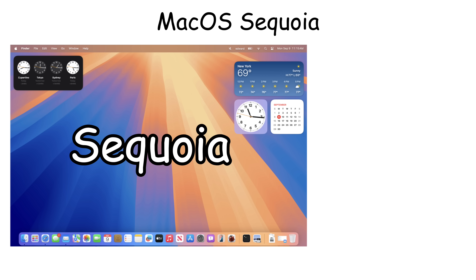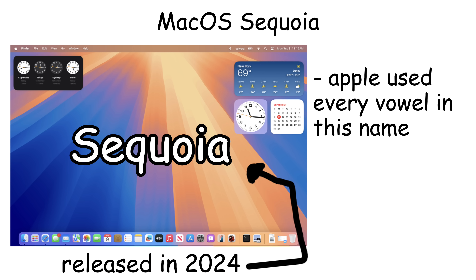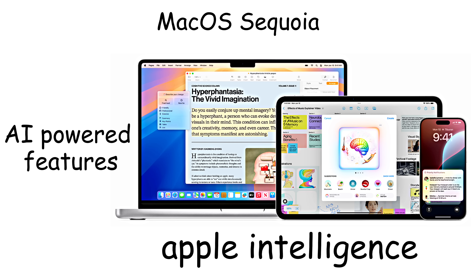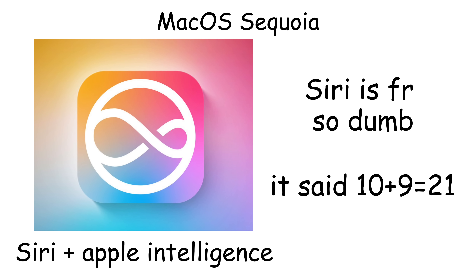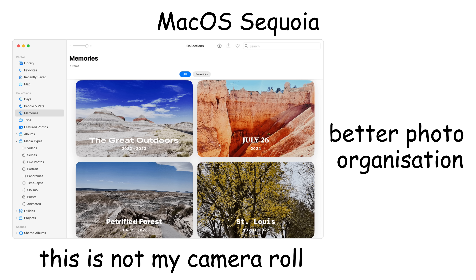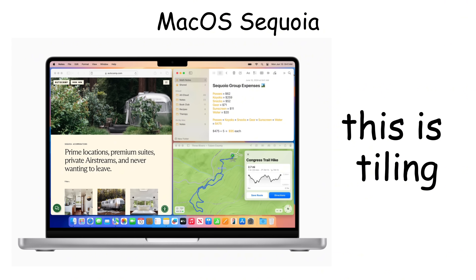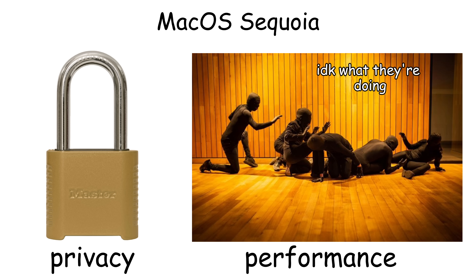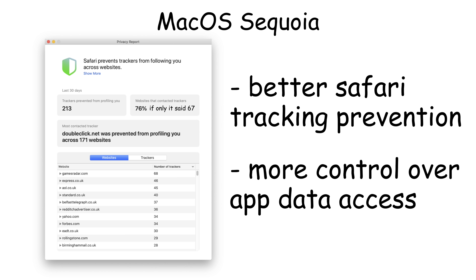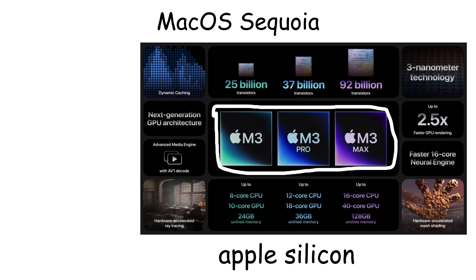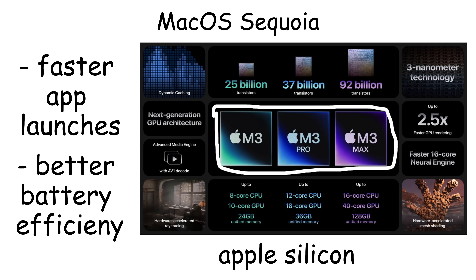macOS Sequoia was released in 2024, continuing Apple's focus on user experience and artificial intelligence integration. Sequoia introduced Apple Intelligence with AI-powered features like smarter Siri responses, improved writing tools, and better photo organization. It enhanced window management with improved tiling options. Enhanced privacy features included better Safari tracking prevention and more control over app data access. Sequoia also improved performance on Apple Silicon Macs with faster app launches and better battery efficiency.